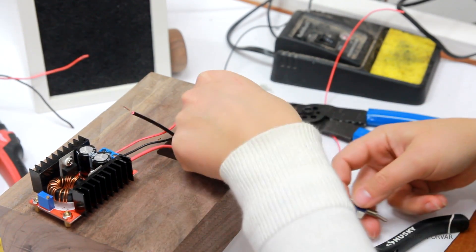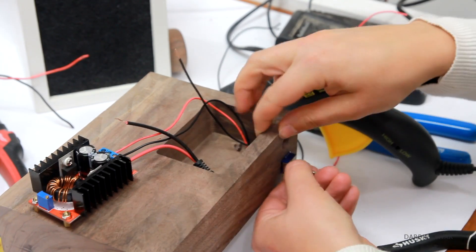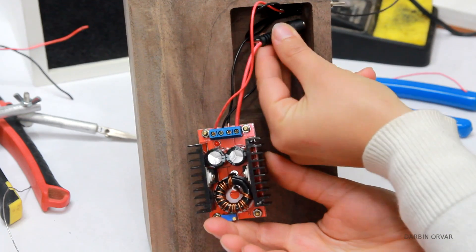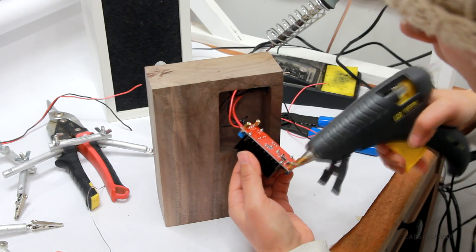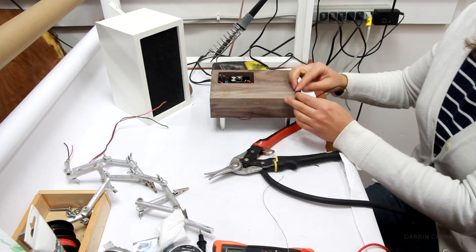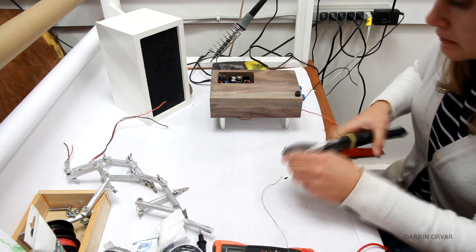Then I'm attaching the switch through the hole here with some hot glue. I have a power cord here attached to the booster so that is going into the second hole I have prepared here. And then gluing the booster down. Now all the electronics are in place.